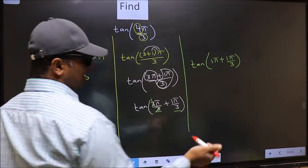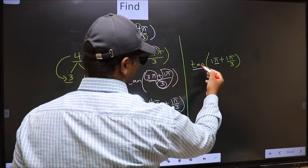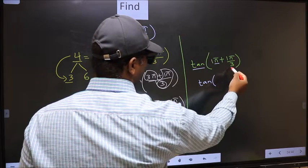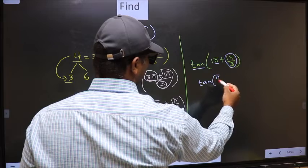Next, here we have π. So tan is not going to change, it will remain tan. And inside we get this angle π/3.